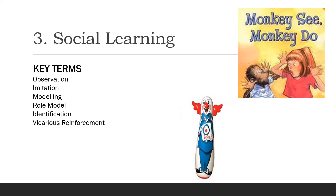Vicarious reinforcement is a type of indirect reinforcement, whereas operant conditioning is direct. With vicarious reinforcement, an individual sees another person be reinforced. For example, if you see your friend get a detention for shouting out in class, you are less likely to shout out yourself. However, if you see someone be rewarded with a sticker for putting their hand up, you are more likely to do the same. So vicarious reinforcement means you are more or less likely to perform a behaviour depending on whether you see others rewarded or punished for it.